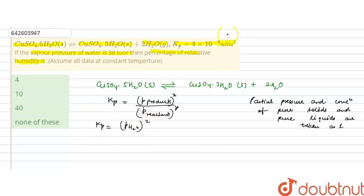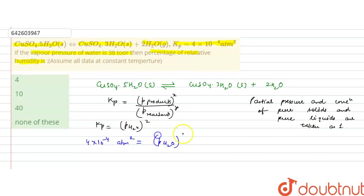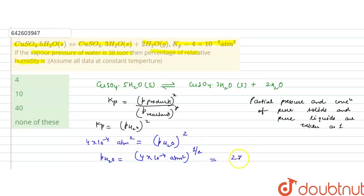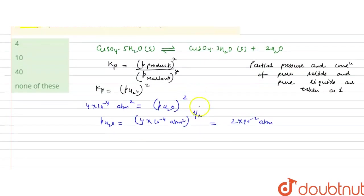Kp is given as 4 × 10⁻⁴ atmosphere squared. We have to calculate the partial pressure of water from here. Since Kp equals P²(H2O), partial pressure of water equals the square root of 4 × 10⁻⁴, which is (4 × 10⁻⁴)^(1/2) = 2 × 10⁻² atmosphere, that is 0.02 atmosphere.